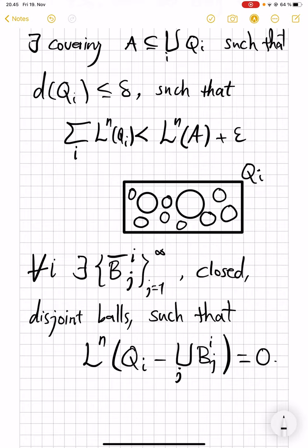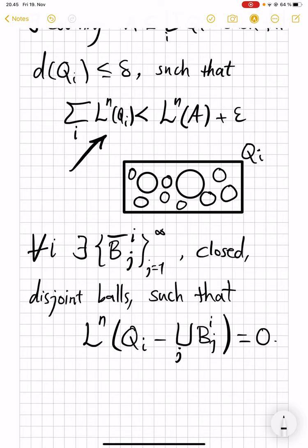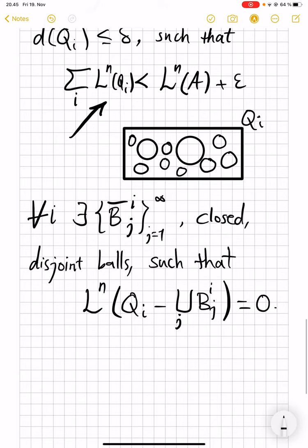Okay, so we have a union of cubes here, satisfying this condition. And now, for every cube, we find this union of balls. We redo it for every cube.